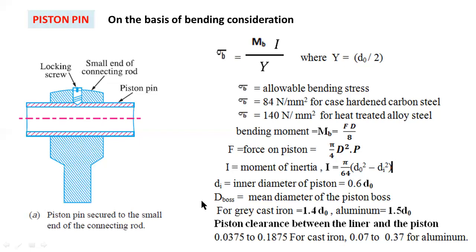These are the complete design procedures for a piston and piston parts. In this session I explained the entire design of a piston, piston pin, piston rings, and piston barrel. In the next class I will explain how to solve problems using these six steps to design a piston for a single-cylinder or multi-cylinder engine.